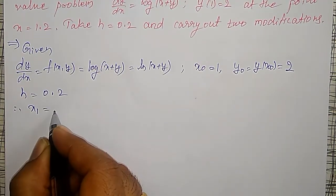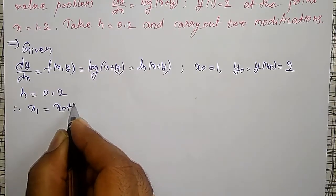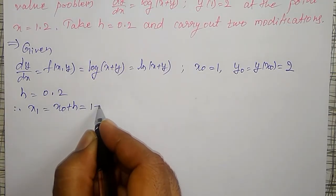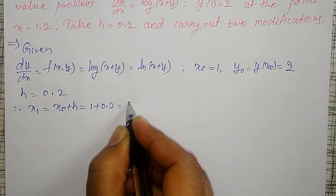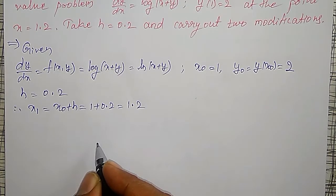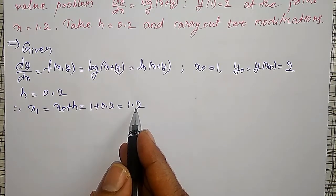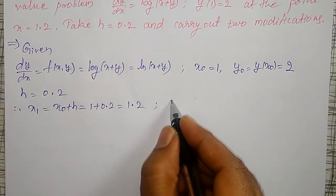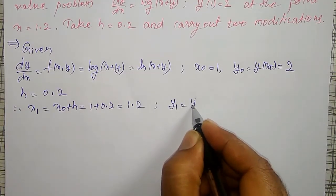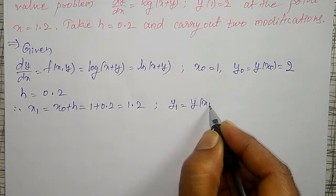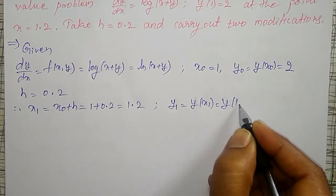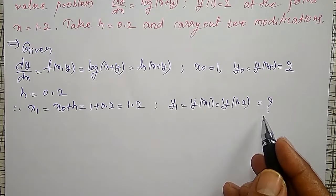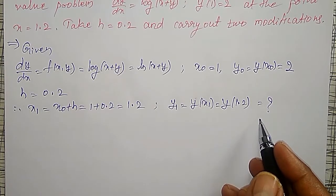Therefore, x1 will become x0 plus h, that is 1 plus 0.2 equal to 1.2. At this particular value, I have to calculate the y value, that is y1, y at x1, y at 1.2, which is my required solution to be calculated.